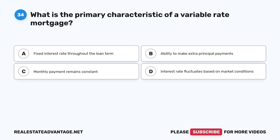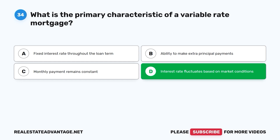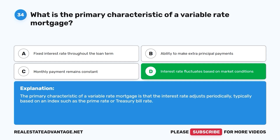Question 34. What is the primary characteristic of a variable-rate mortgage? A. Fixed interest rate throughout the loan term. B. Ability to make extra principal payments. C. Monthly payment remains constant. D. Interest rate fluctuates based on market conditions. The correct answer is D. The primary characteristic of a variable-rate mortgage is that the interest rate adjusts periodically, typically based on an index such as the prime rate or treasury bill rate.